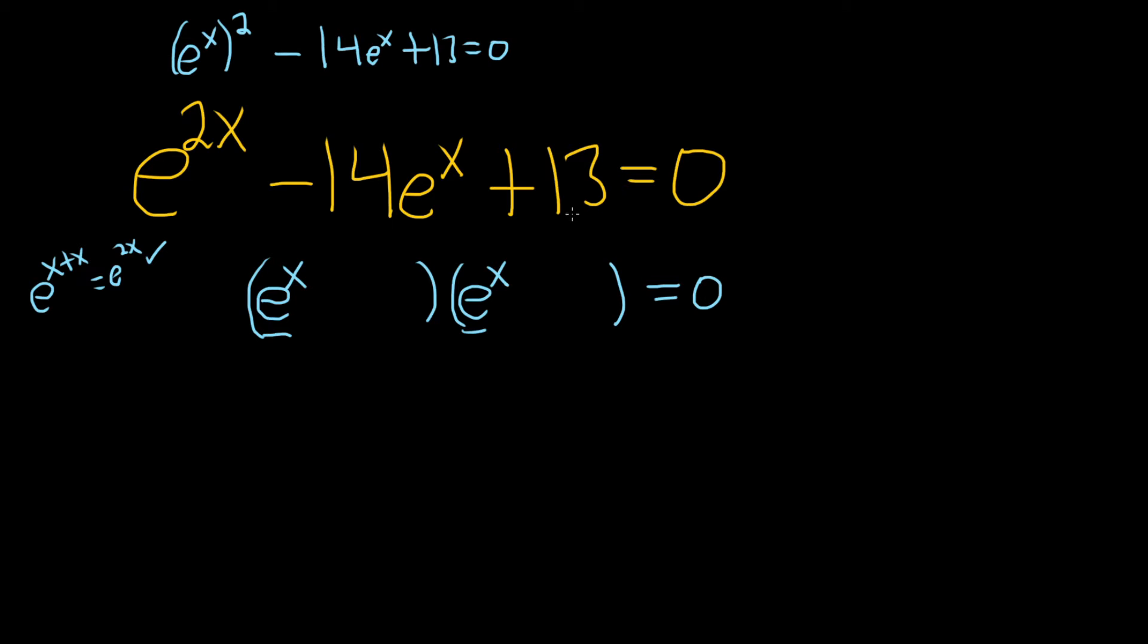Now we just need two numbers that multiply to 13 and add to negative 14. So I think 13 and 1 should work. And they should both be negative. This way they'll add to negative 14. Negative 13 times negative 1 is positive 13. And then if you add negative 13 and negative 1, you do get negative 14.